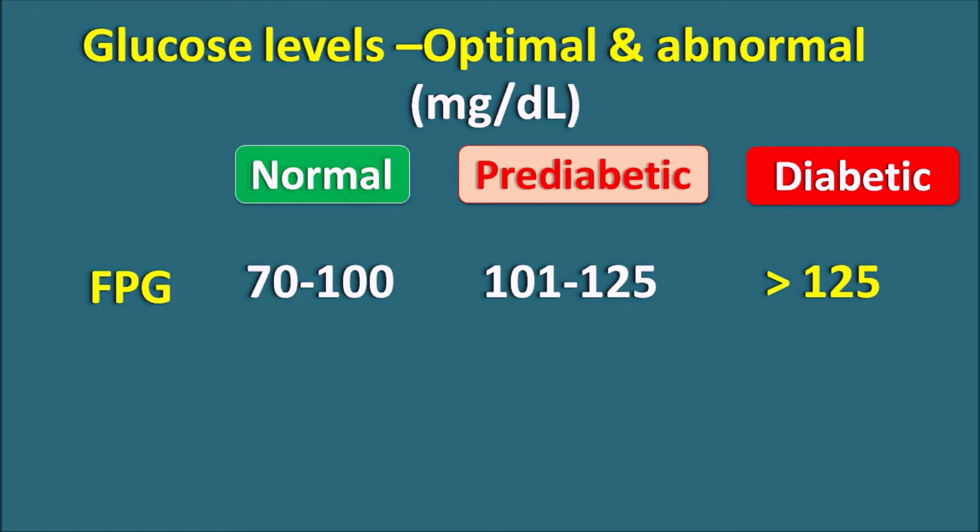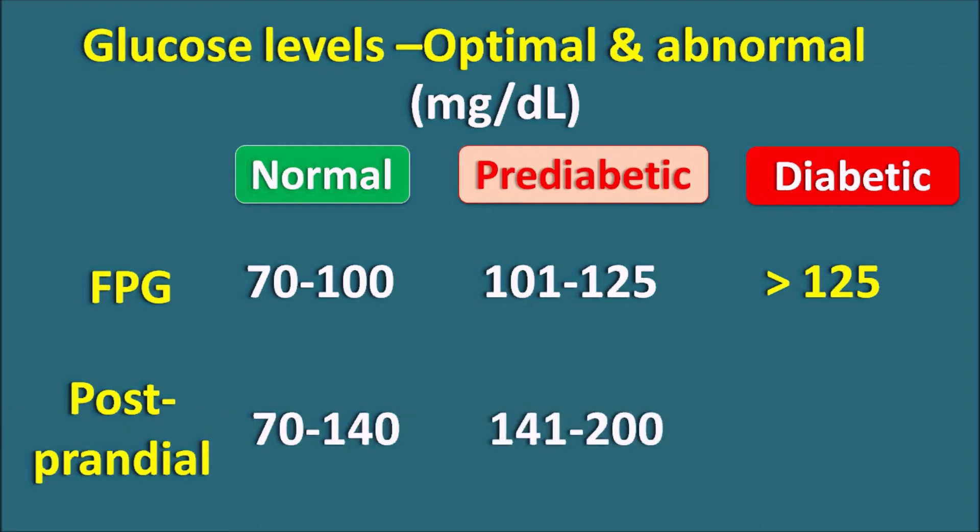Similarly, we can also estimate the glucose levels after the meal. This is what we call the postprandial glucose levels. After a meal, the glucose levels will be highly increased, so postprandial glucose limits will be somewhat more compared with the FPG. In a normal condition, the level should be 70 to 140 mg per dL. When their levels are increased from 141 to 200, below 200, they can be called as pre-diabetic. But when they are abnormally increased above 200, it indicates the diabetic condition. For a normal level, the FPG value should be less than 100 and postprandial glucose levels should be less than 140.